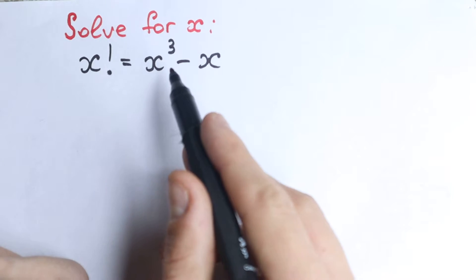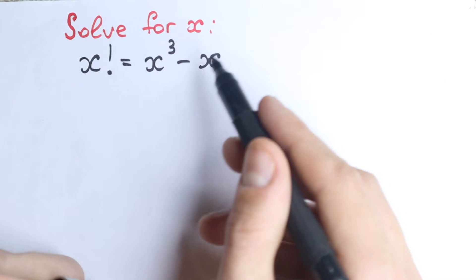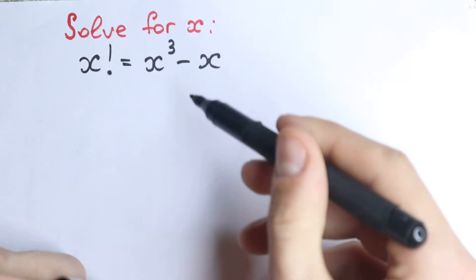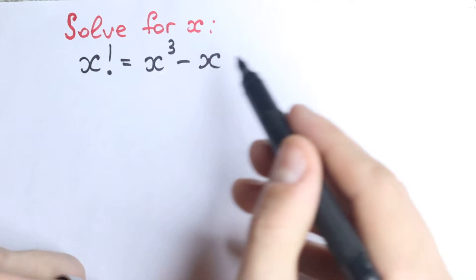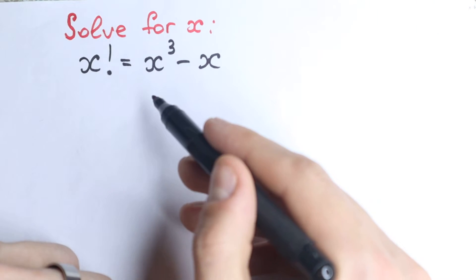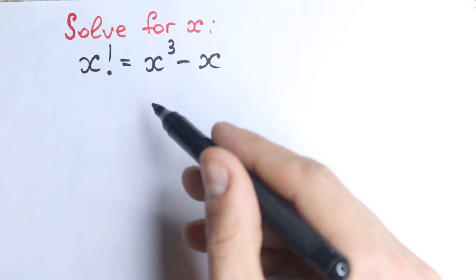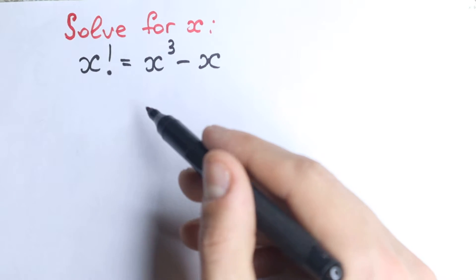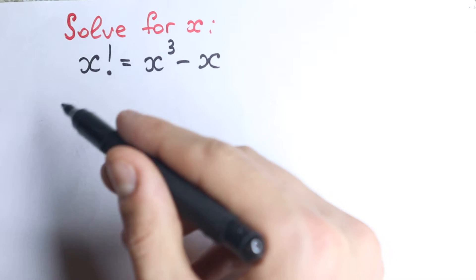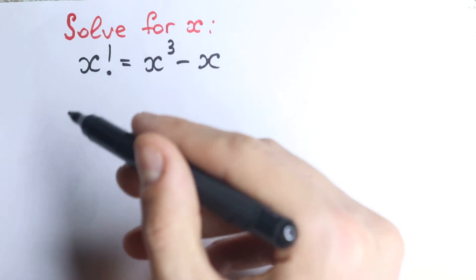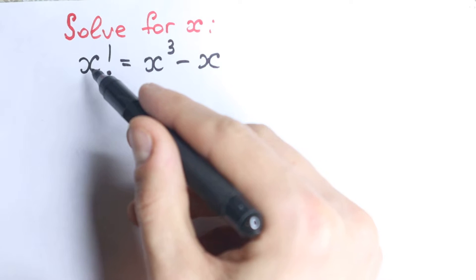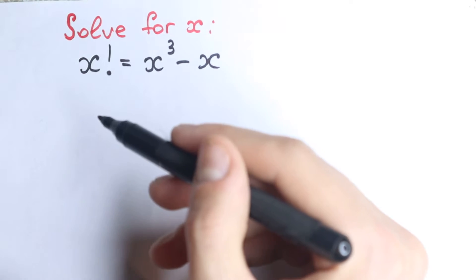First of all, it's hard to solve this by inspection and it's not good for math, because we need to solve it correctly step by step with explanation — we cannot just write x equals 1 and be done. We need to solve it and explain it step by step. We have this x factorial, and it's not ideal because we don't prefer to solve expressions with factorials directly, so we need to cancel this factorial step by step.